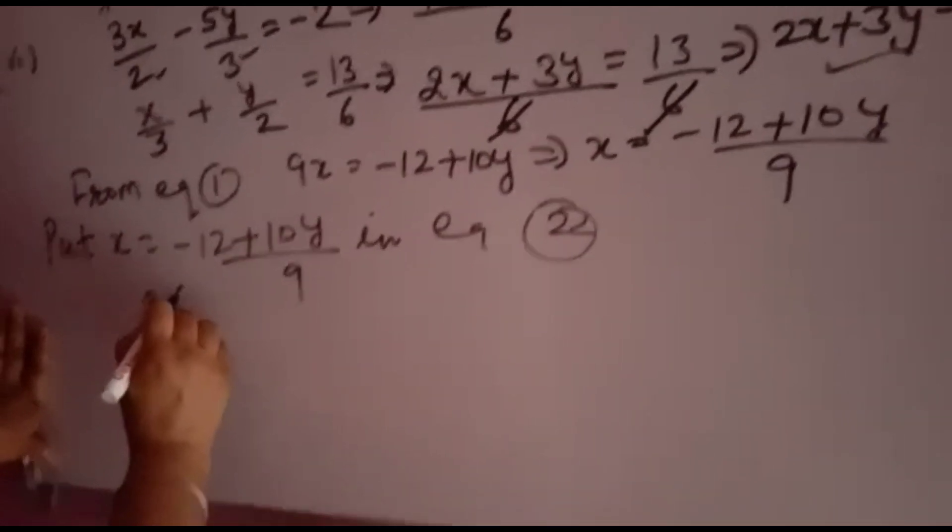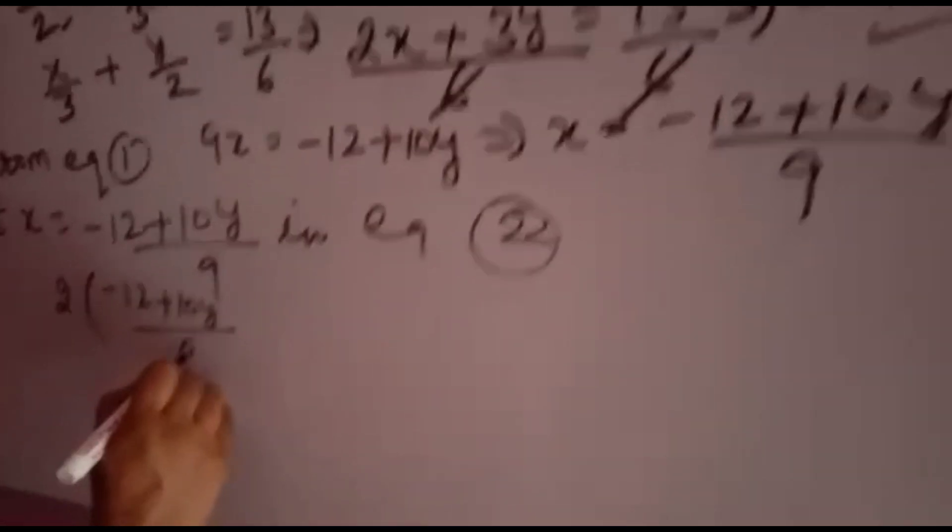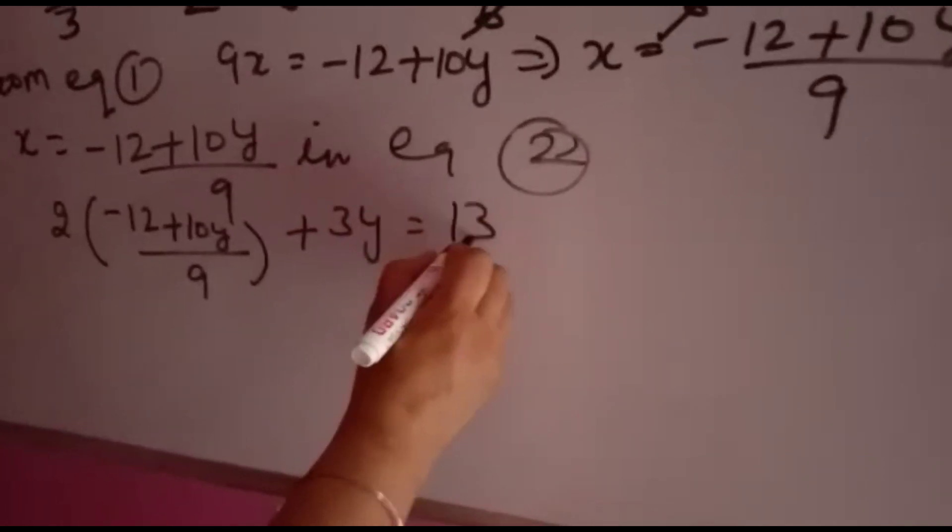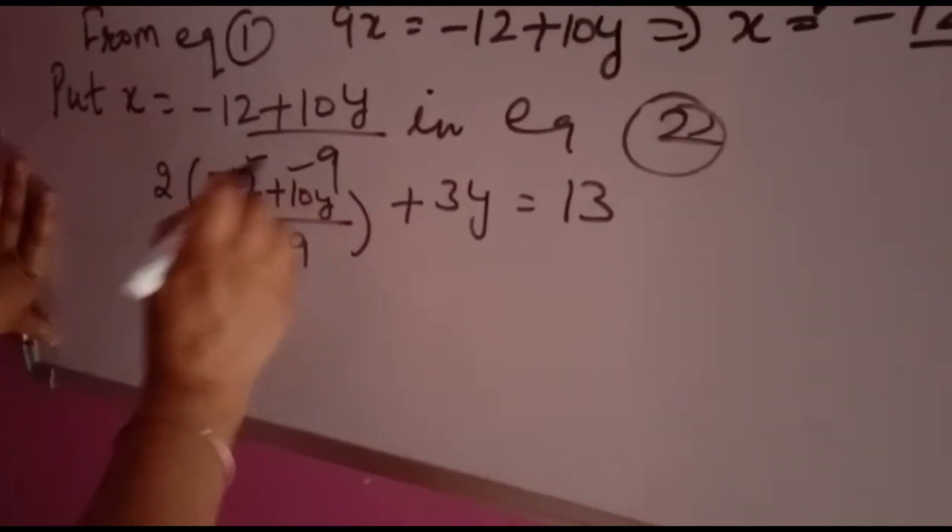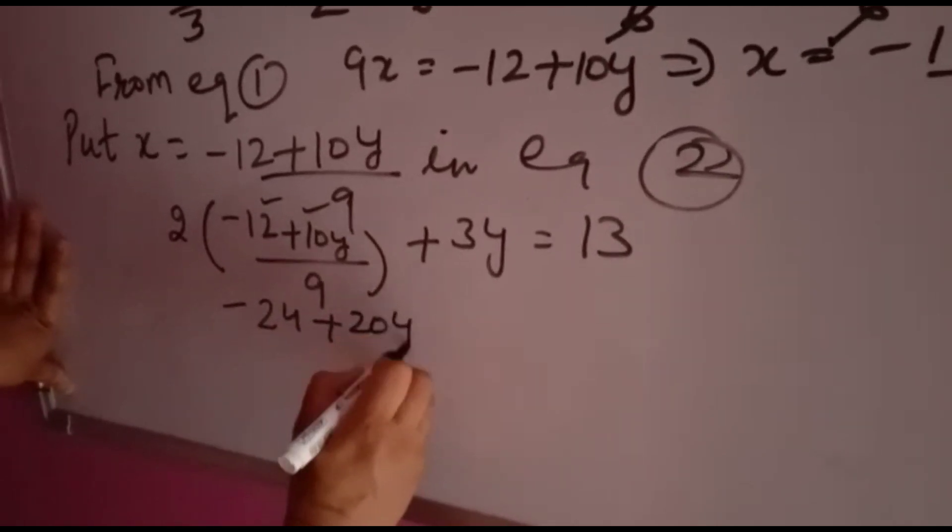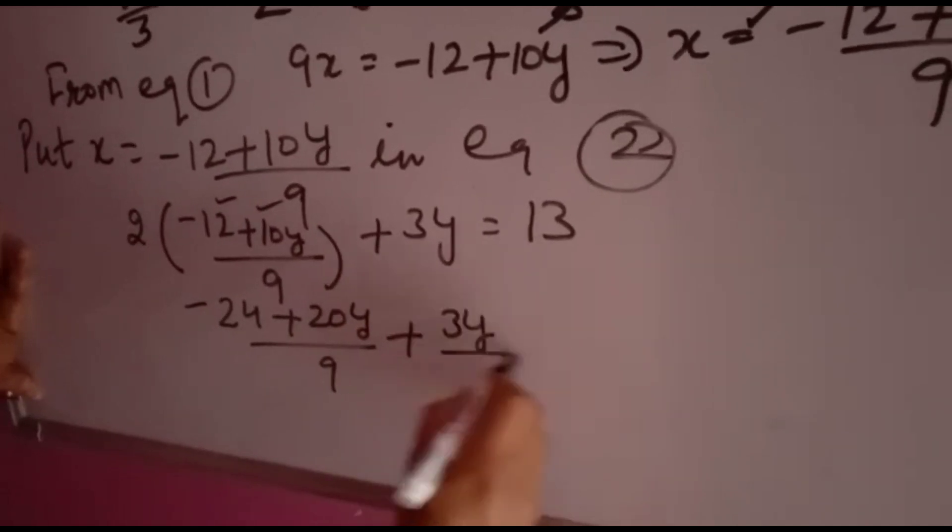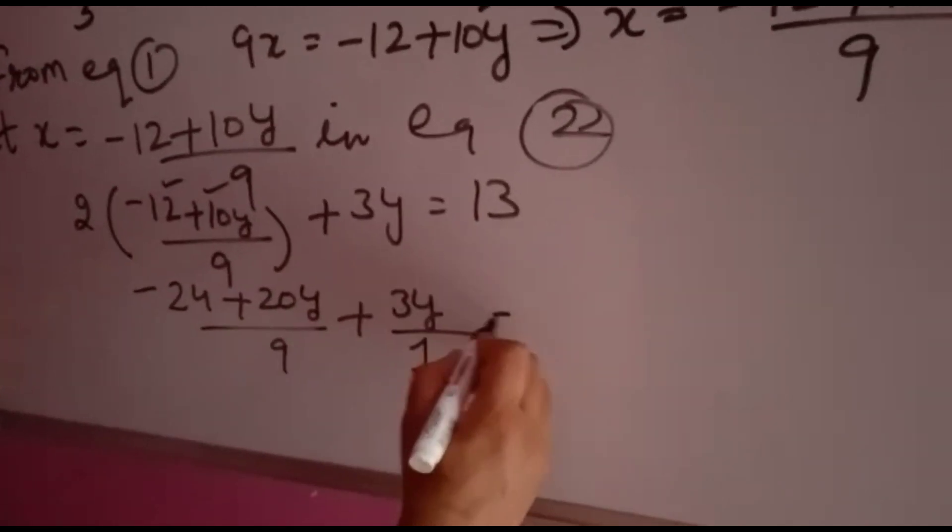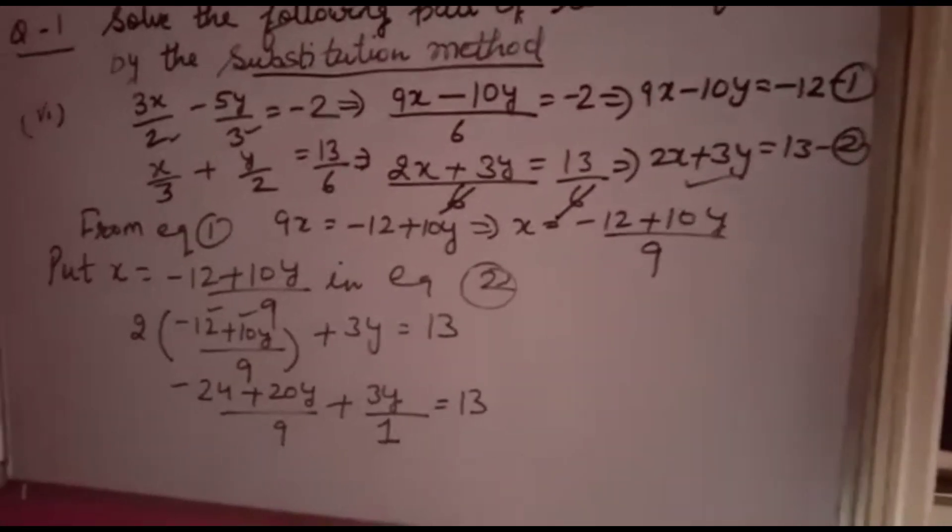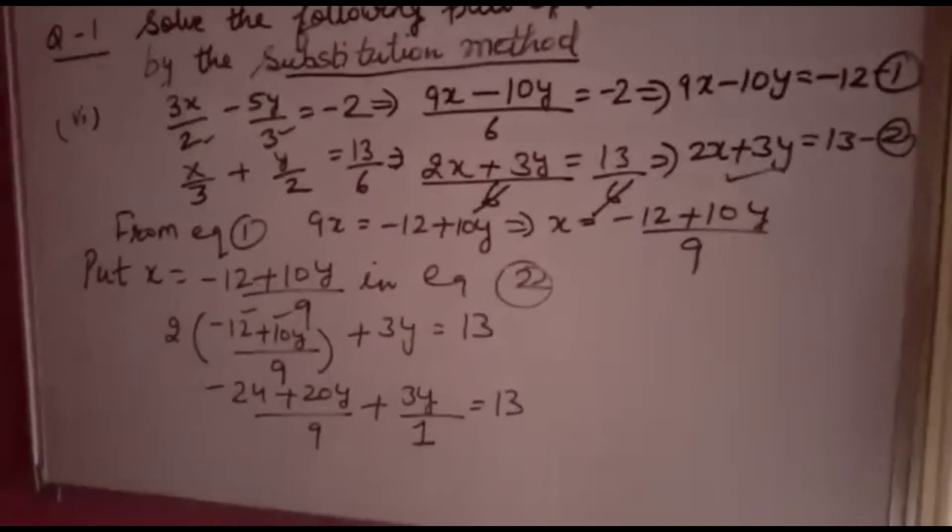You will get 2 times minus 12 plus 10y over 9 plus 3y is equal to 13. Now 2 you will multiply by both. So minus 12 plus 20y over 9 plus 3y. Now 3y, nothing is there downside, so you will write 1 equal to 13. Up to here you see once and note down if you want. I will rub and solve further.